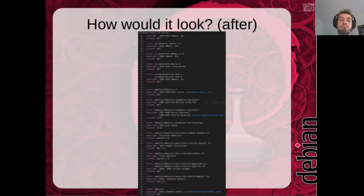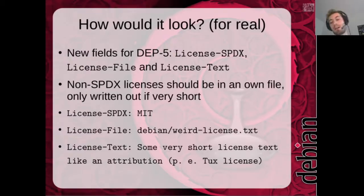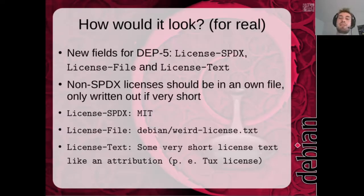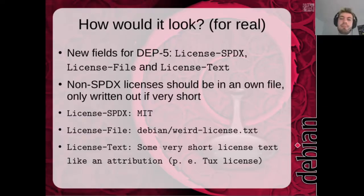So how could one implement this in the standard? I thought of three new identifier entries. One would be License-SPDX — so instead of writing 'License: MIT' you'd write 'License-SPDX: MIT'. If there's a license not covered by the SPDX license list, it would be stored in a separate file. And for short licenses, maybe a 'License-Text' field. As you can see below, some examples of how it would look with SPDX or with a file.